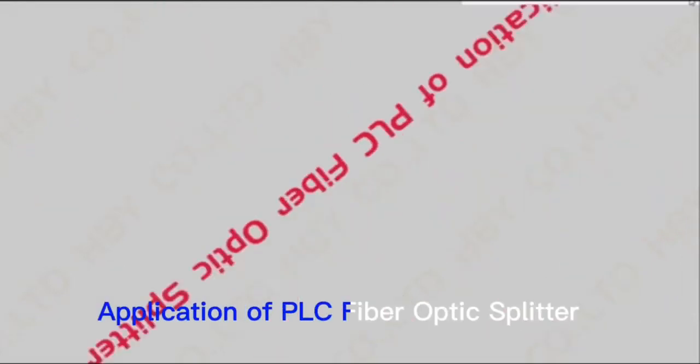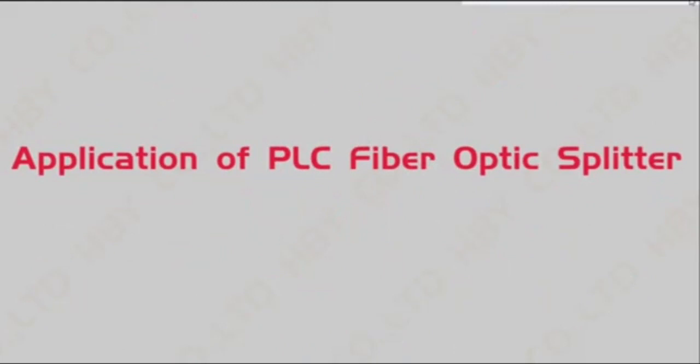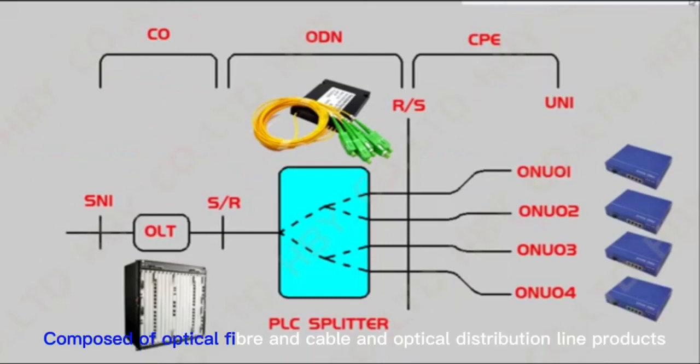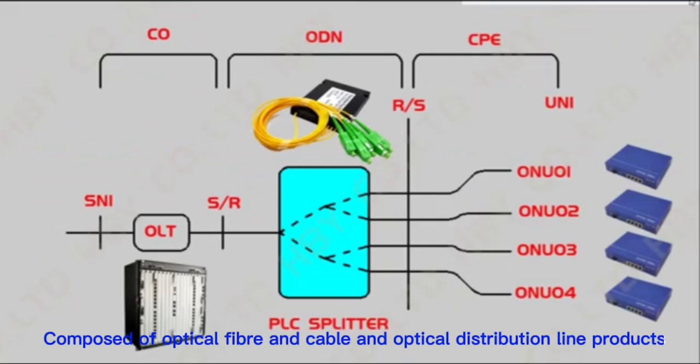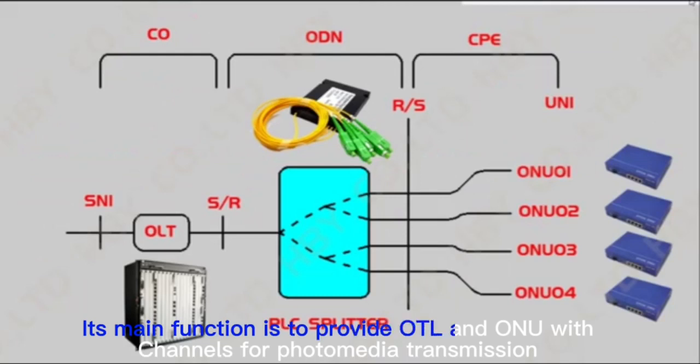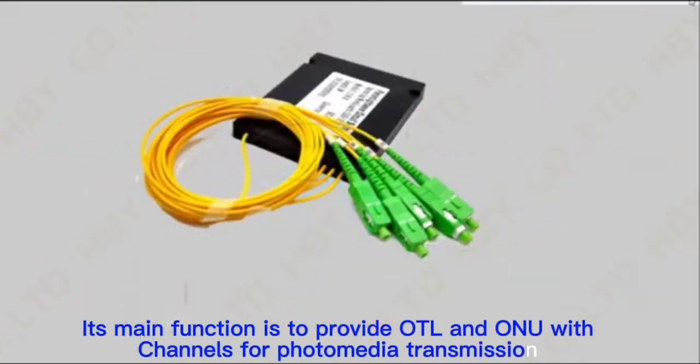Application of PLC fiber optic splitter: It is a key part of the optical access network, composed of optical fiber, cable, and optical distribution line products. The optical splitter is the core device in ONU. Its main function is to provide OLT and ONU with channels for optical media transmission.